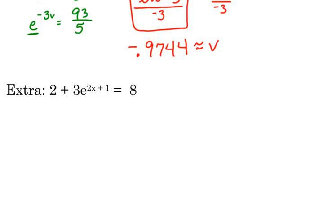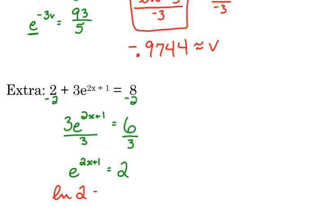Just a reminder. You cannot add the 2 and the 3. I know it's tempting to do so, but you cannot add the 2 and the 3 here. We need to start by subtracting 2. So we have 3E to the 2x plus 1 is equal to 6. Then divide by 3. We have E to the 2x plus 1 is equal to 2. The exponential is by itself now. So let's write it in logarithmic form using the natural log. So we have the natural log of 2 is equal to 2x plus 1.